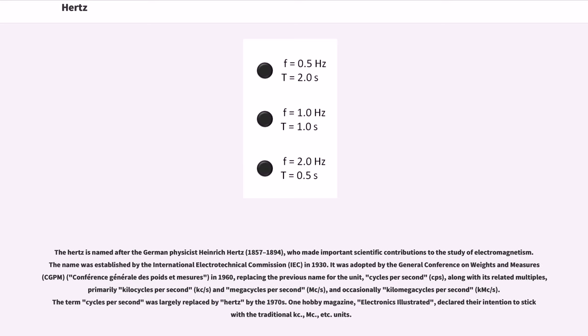The hertz is named after the German physicist Heinrich Hertz (1857 to 1894), who made important scientific contributions to the study of electromagnetism. The name was established by the International Electrotechnical Commission (IEC) in 1930. It was adopted by the General Conference on Weights and Measures (CGPM) in 1960, replacing the previous name for the unit, cycles per second (CPS).